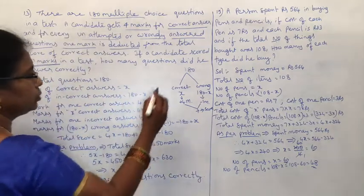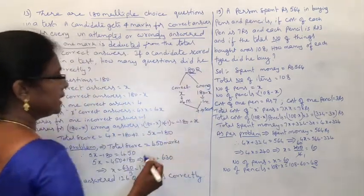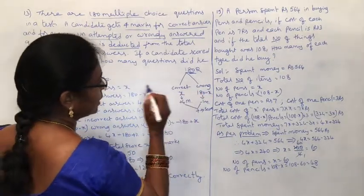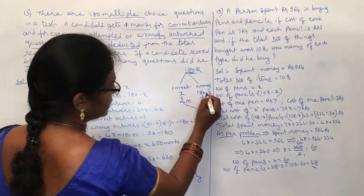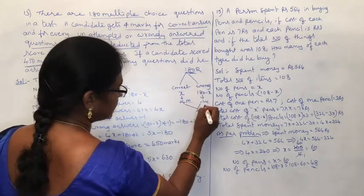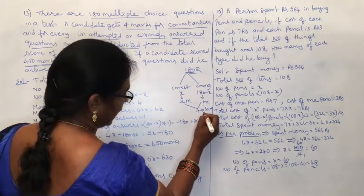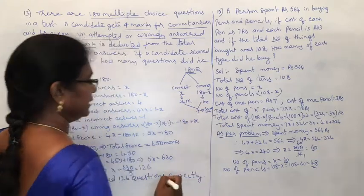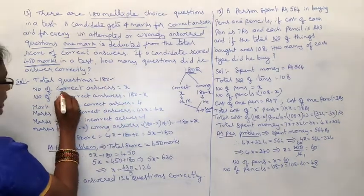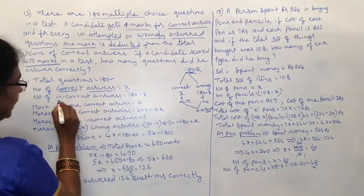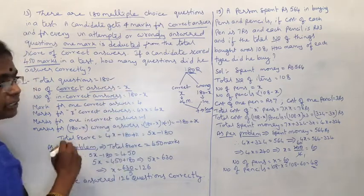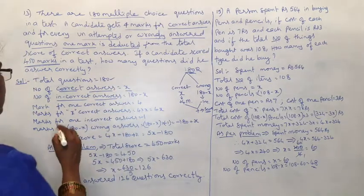Total questions are 180. We assume correct answers as x, so wrong answers become 180 minus x. For correct answers, 4 marks each. For wrong answers, minus 1 mark each. Adding both gives the total score of the candidate.